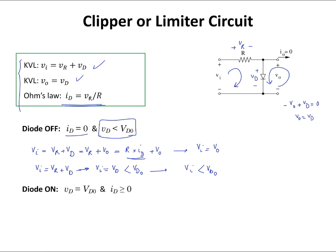Now let's look at the case of the diode being on. When the diode is on, the voltage across the diode equals VD0 and the current through the diode is positive. Because Vout = VD = VD0, I know the output voltage is going to be a constant value equal to VD0. I'll use this inequality to find the range of VI for which this condition holds. The current ID flows through the diode and the same current flows through the resistor.